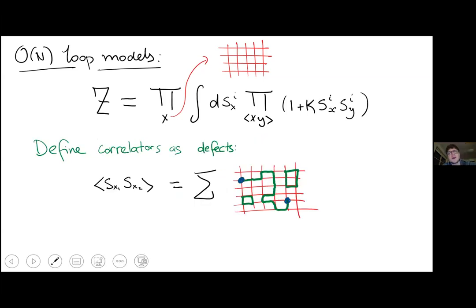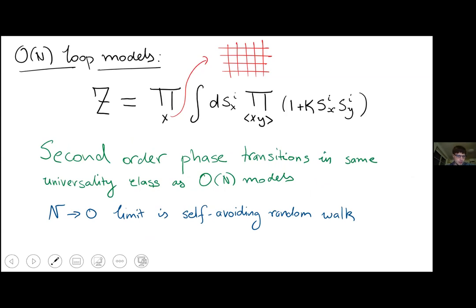When we do perturbation theory in k and integrate over each individual spin, we find a perturbative expansion in terms of loop diagrams: every link between two neighboring sites gives a power of k, and every closed loop gives a factor of N. So we can compute the partition function this way, and N just enters as a number weighting each spin configuration — there's no reason N has to be an integer.